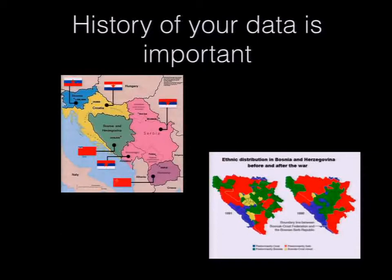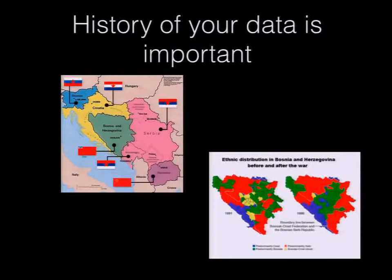One of the reasons you version data is because keeping history of that information is very important. Here are a couple of examples. On the left we have a map of the former Yugoslavia — right now we have six sovereign nations as a result of the war in the 90s. The map on the right shows the ethnic distribution of Bosnia before and after the war. It's important to keep track of these changes, whether political, physical, or natural, in the way we represent our information. That's what a lot of people think about when they think about versioning: historical information.